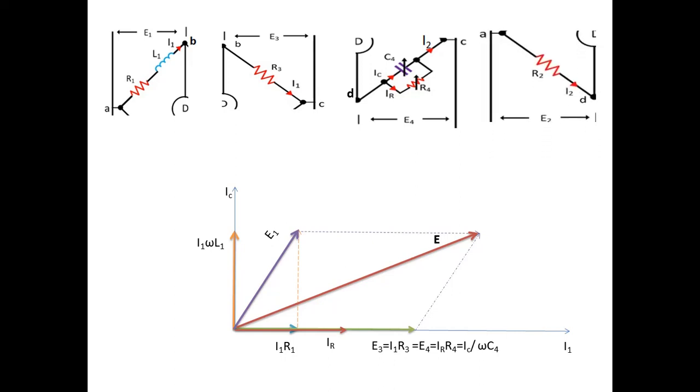Next arm, AD, behaves as a resistive circuit. So we have the voltage E2 equal to I2 into R2. But this voltage under balance condition will be equal to E1, so it will be along E1. We have E1 is equal to E2 equal to I2 into R2.